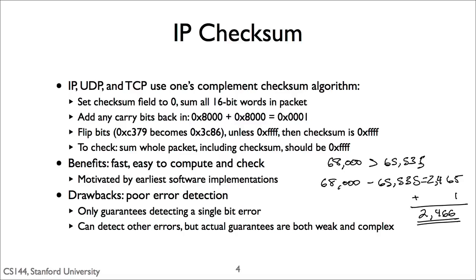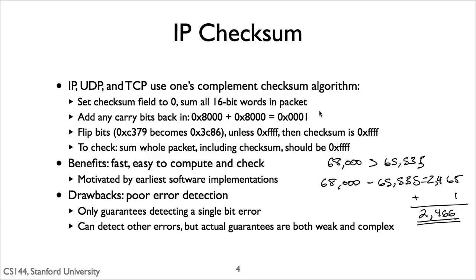The drawback is that it's not really that robust. While it definitely detects a lot of random errors, the guarantees it can give on what errors it detects are really weak. In practice, it can only promise to catch single bit errors. But it works pretty well, and link layers do a lot of the heavy lifting for us. Link layers do their heavy lifting with something called a Cyclic Redundancy Check, or CRC.